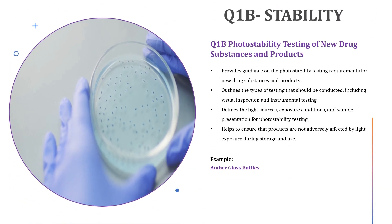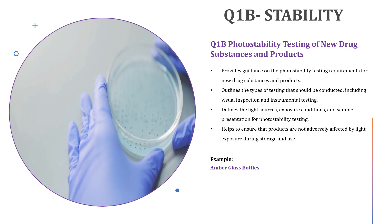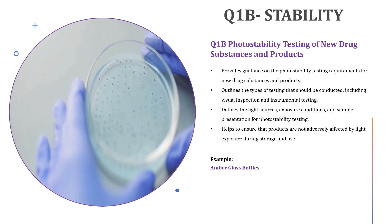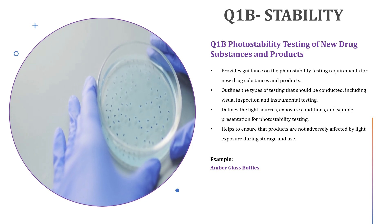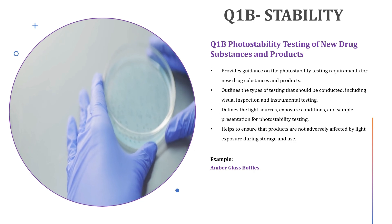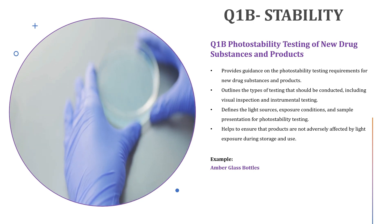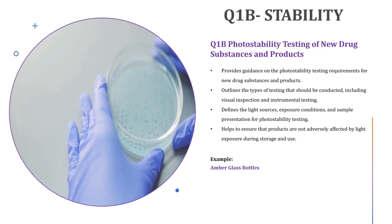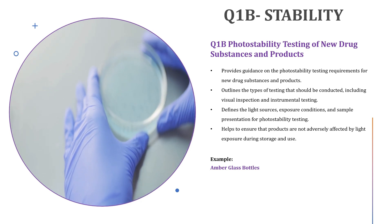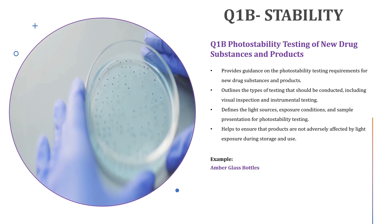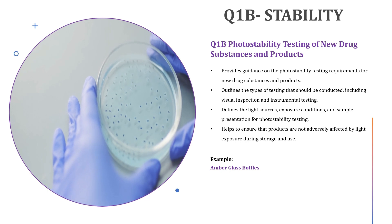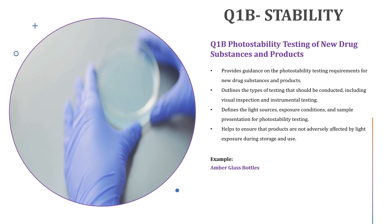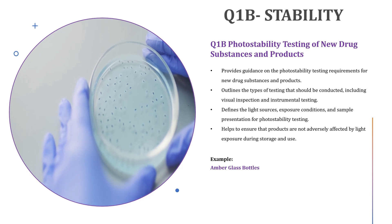Now let us look at Q1B — photo stability testing of new drug substances and products. Have you ever noticed some cough syrups come in amber glass bottles? This is because some ingredients may be light sensitive, especially to UV light, and amber glass bottles provide protection against light-induced degradation. During ICH Q1B photo stability testing, different packaging materials are tested to determine how they affect product stability when exposed to light, including natural and artificial light sources. The results are used to establish appropriate packaging and storage conditions to ensure the product remains safe, effective, and stable.